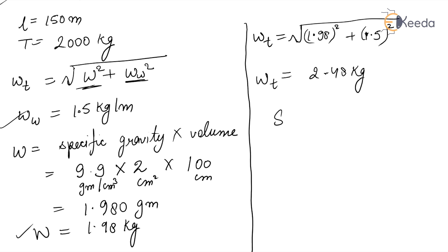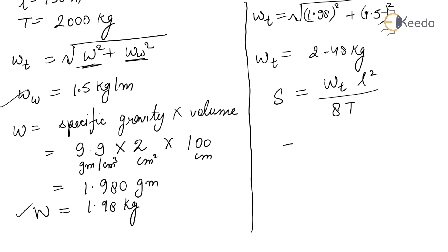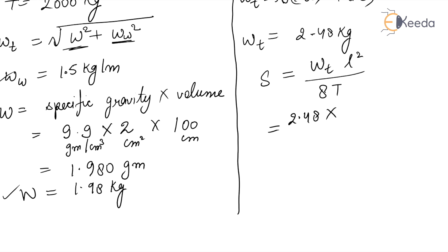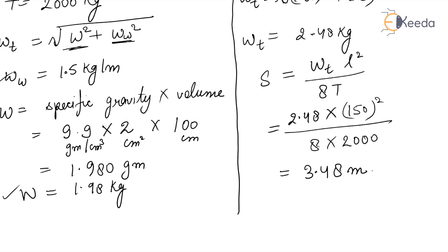SAG = WT × L² / (8T). Substituting WT = 2.48 kg and span length L = 150 m and tension T = 2000 kg, we get SAG = 2.48 × 150² / (8 × 2000). This equals 3.48 meters.